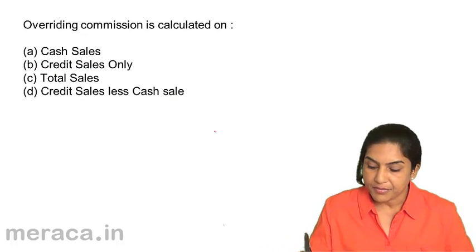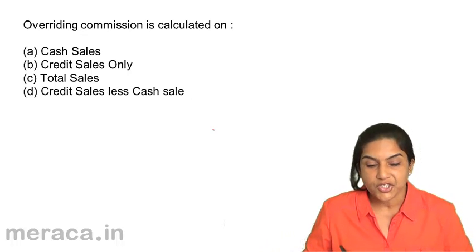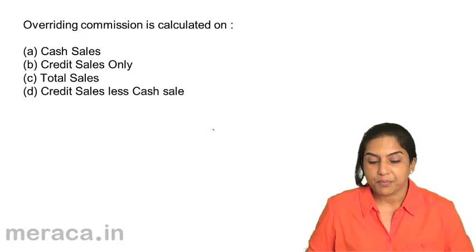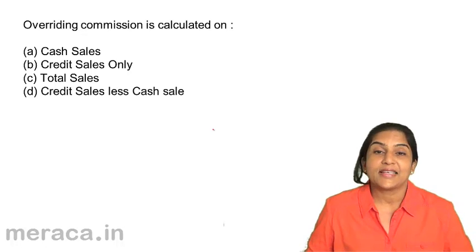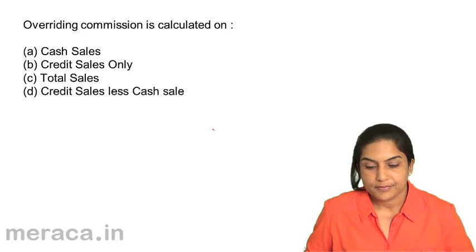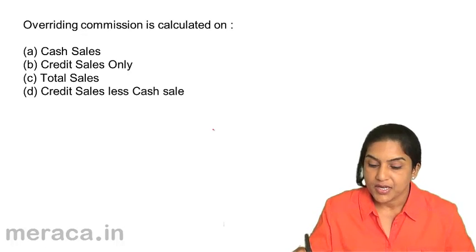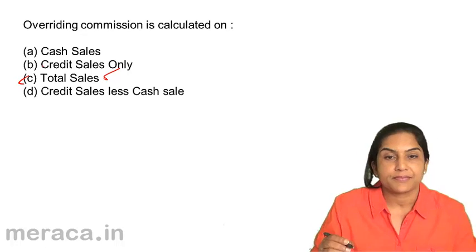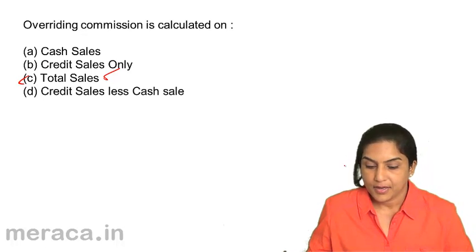Overriding commission is computed on: A. Cash sales, B. Credit sales only, C. Total sales, D. Credit sales less cash sales. Overriding commission is computed usually on total sales. Correct answer: C, total sales.